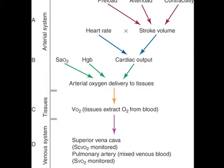Those three components go into the makeup of stroke volume. Stroke volume is the volume of fluid being pumped out of the heart each time it contracts. Over to the left, you also notice heart rate. Heart rate times stroke volume is the equation that makes up cardiac output. So the components of cardiac output are heart rate and stroke volume, and the components of stroke volume are preload, afterload, and contractility.